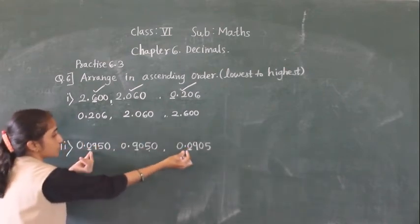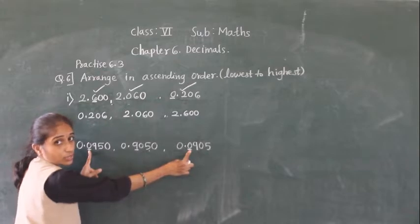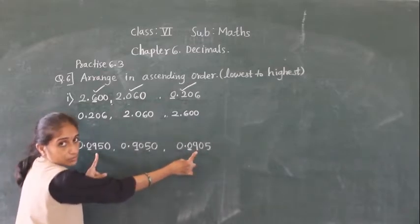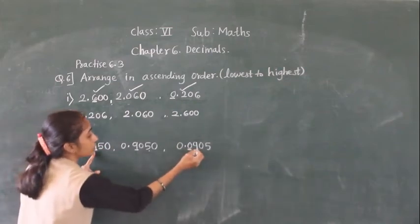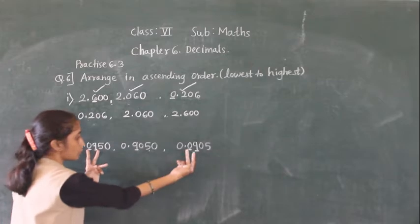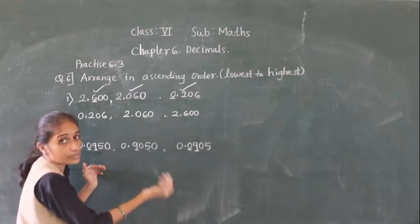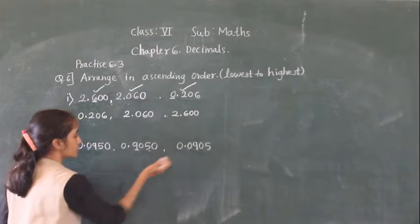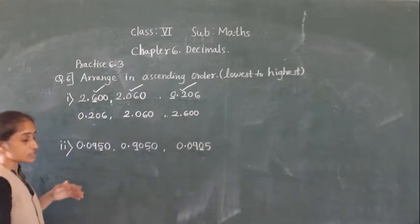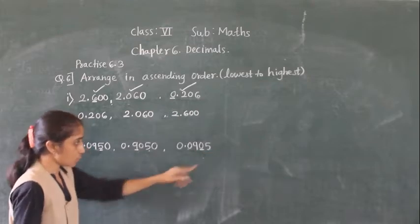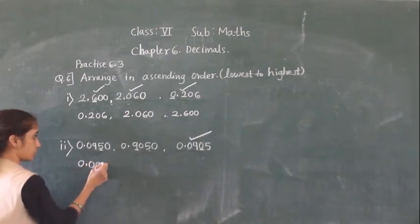The tenths place is 0 for both remaining numbers, so check the hundredths place. At the hundredths place here it is 9 and here also it is 9 — same. So check the thousandths place. At the thousandths place here it is 5 and here it is 0. Zero is smallest, so 0.0905 comes first.